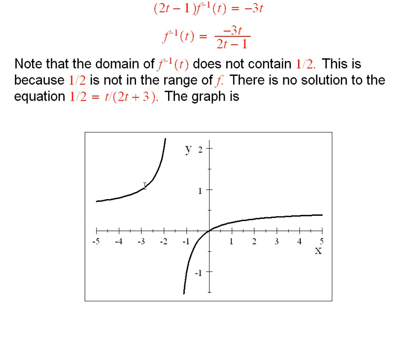And it turns out that this has a horizontal asymptote right here at 1 half. But it's always either bigger than 1 half or less than 1 half. And you can see that by just trying to solve this equation. It has no solution.